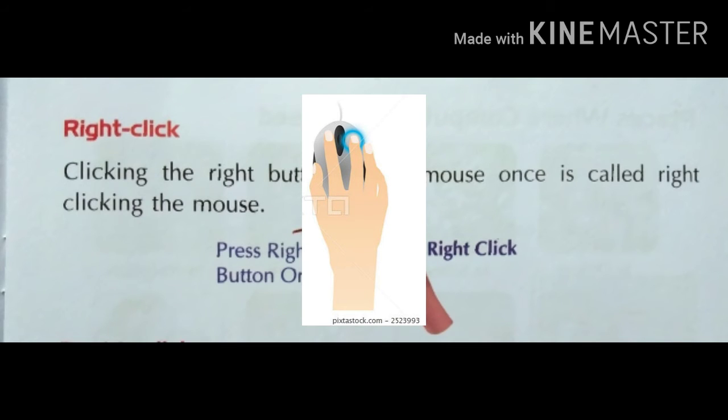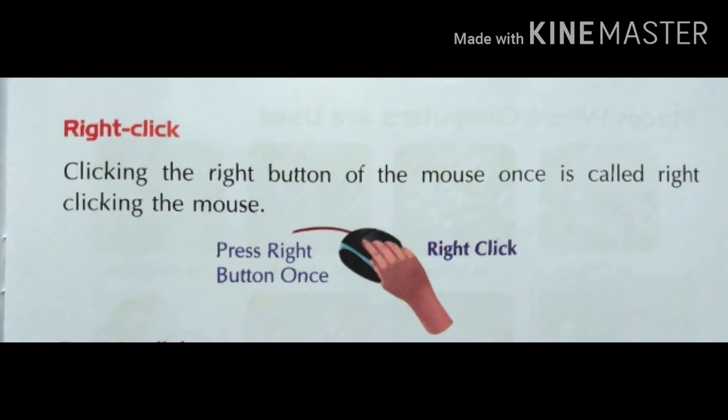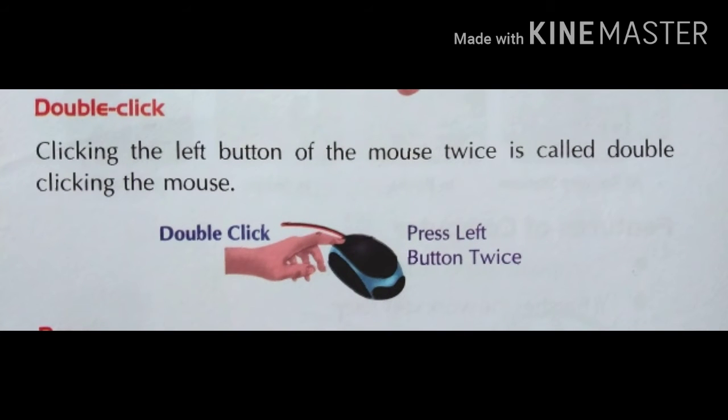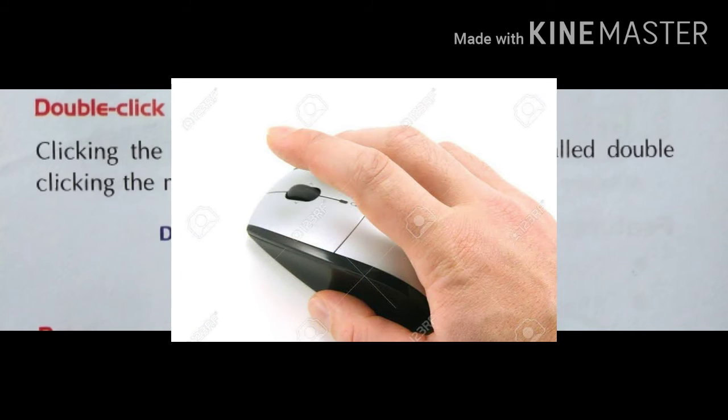Next is double click. Clicking the left button of the mouse twice is called double clicking the mouse. This selects the entire word under your cursor in one step.